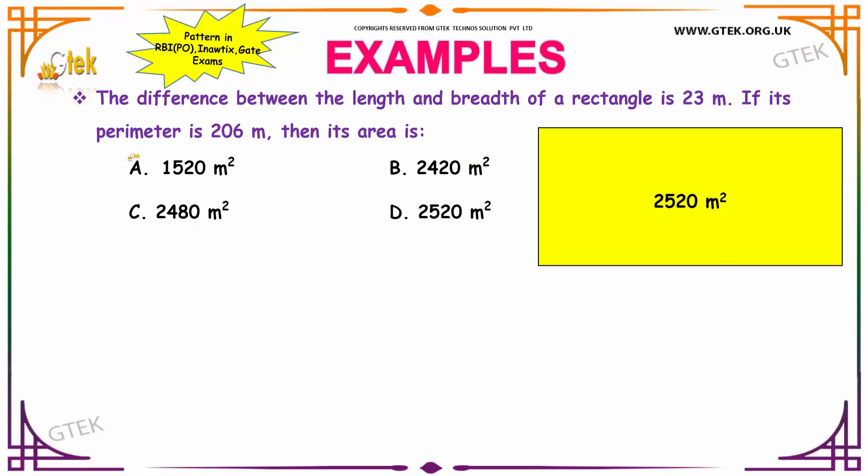Our options are given over here. A. 1520, B. 2420, C. 2480, D. 2520 meter square. So, how to solve this? Let us see.